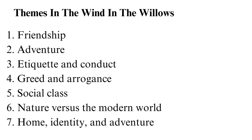Greed and arrogance is another theme: Toad is wealthy and has an inflated sense of self, which leads him to several issues his friends have to help him out of. While his friends are just as wealthy, Toad lacks restraint. Social class is also notable — the friends can afford to go on adventures since they are wealthy, while the lower-class neighbours are working. This social class distinction was common in the Edwardian era and shows how the rich have more privilege than other classes.